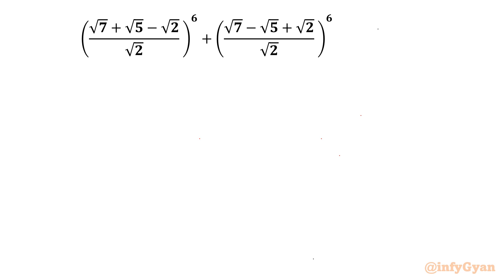Welcome back to Infigyan, my dear friends. Today in this video we are going to simplify one algebraic expression. It is: square root of (√7 + √5 - √2) over √2, whole power 6, plus (√7 - √5 + √2) over √2, whole power 6.